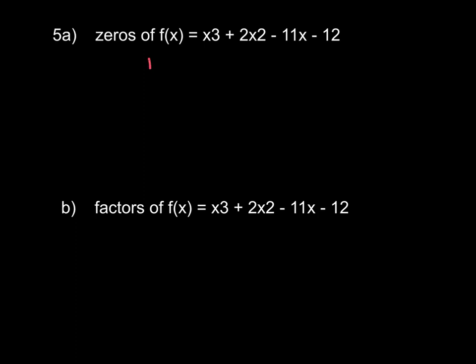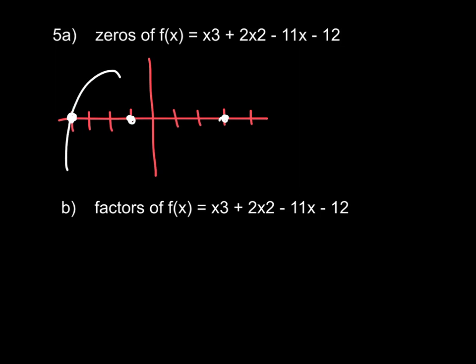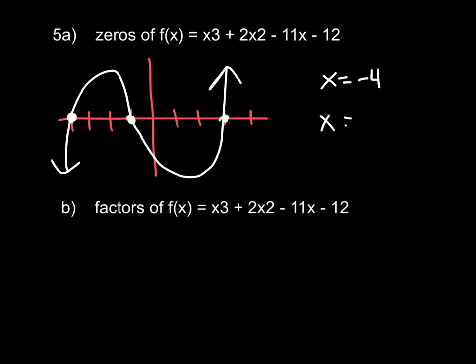Let me just set up a set of axes here. If you go to y equals in your calculator and graph this function, I'm not even concerned about the y values — I'm really just looking at where the graph crosses the x-axis. What we'll see is a function that crosses the x-axis at x equals negative 4, x equals negative 1, and at x equals 3. So our zeros would be x equals negative 4, x equals negative 1, and x equals 3.